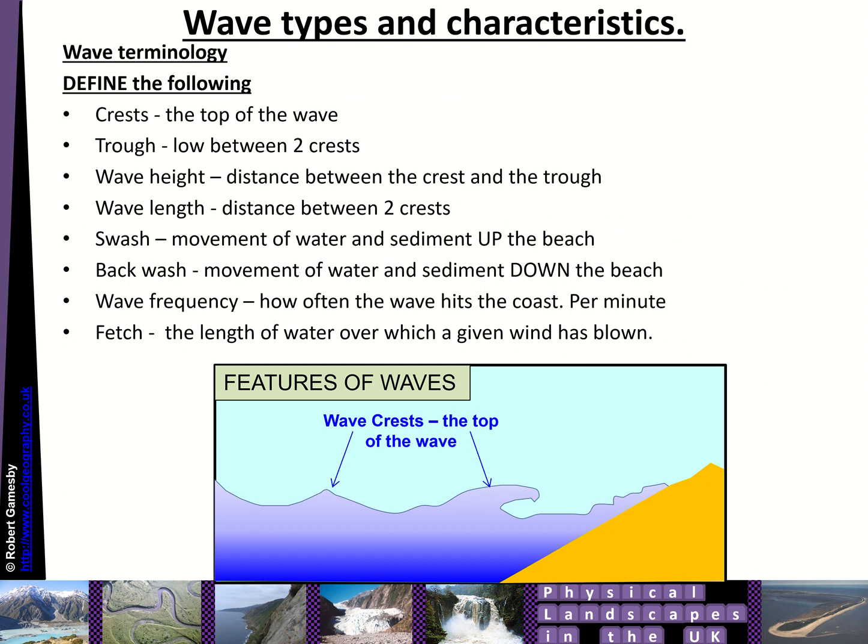Just a couple of key terms for you to understand. The top of a wave is known as the crest, the wave crest. The wavelength is the distance between any two crests, and the wave trough is the low between two crests. The wave height is the gap between the top of a wave crest and the low in the wave trough.